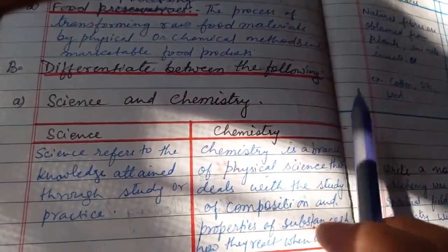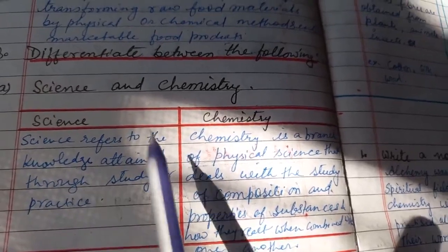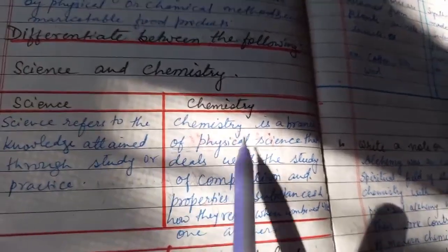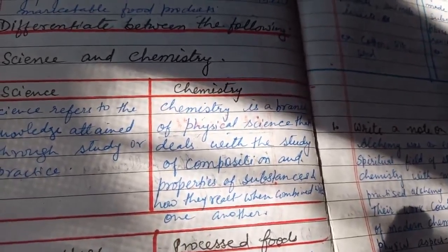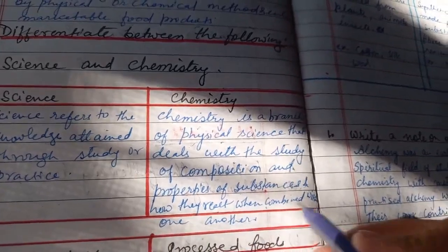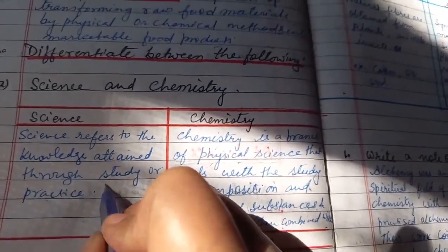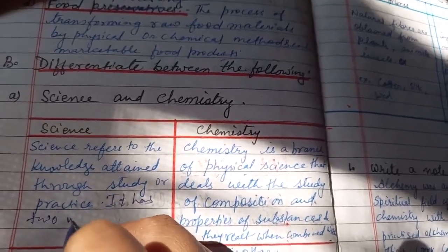Now come to question number B: Differentiate the following science and chemistry. Just write the definition of both. Science refers to the knowledge attained through study or practice. Whereas chemistry is a branch of physical science deals with the study of composition and properties of substances and how they react when combined with one another. You can add one more sentence in the definition of science: it has two main branches that is physical science and natural science.